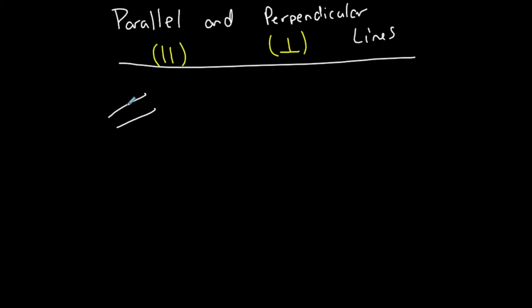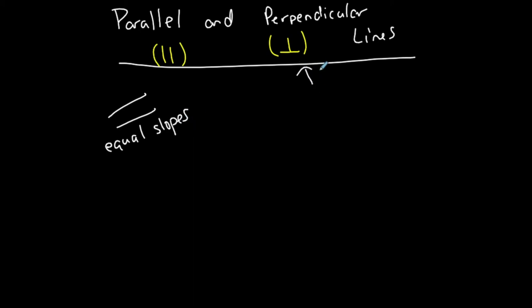If you look at parallel lines, they never cross — they never intersect. So what do they have in common? They have the same rate of change, which means they have equal slopes. So parallel lines have equal slopes.